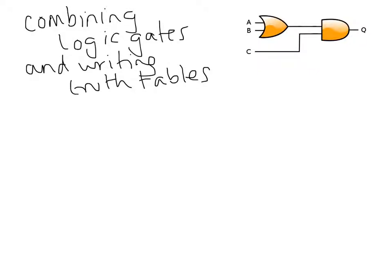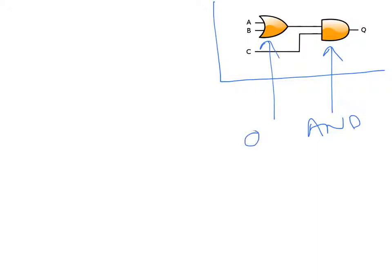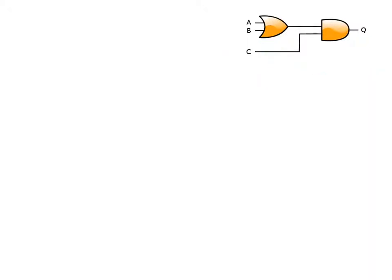In this short video we're going to combine logic gates and write their truth tables. Let's look at the pair of logic gates to the right of the screen. We can see that we have an AND gate and an OR gate — I can tell this from their symbols. We can also see that there are three inputs. So now let's draw the truth table for this pair of logic gates.